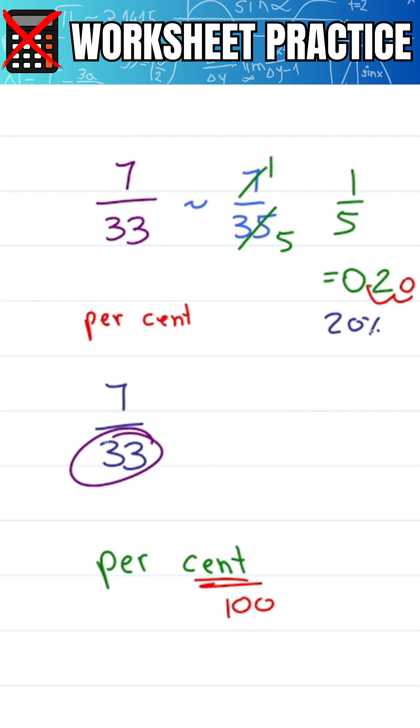33 is a third of 100, and so if I multiply it by 3, I will get 99, which is close enough to 100.